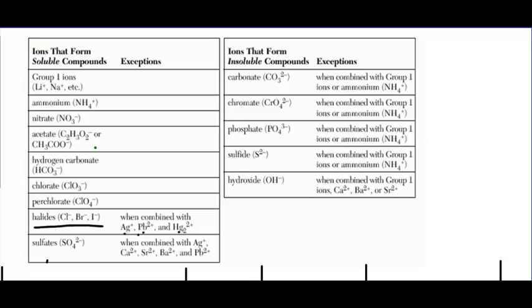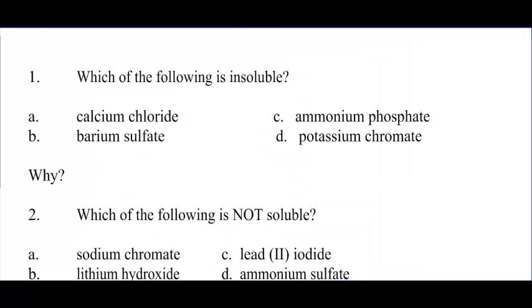Same thing with the insoluble compounds. Hydroxides are insoluble, except when combined with anybody from group 1 or calcium or barium or strontium. So when you're using table F, always check your exceptions column.